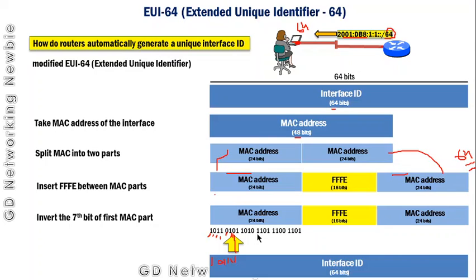Remember the steps — they are easy. Take the MAC address, divide it into two parts, insert FFFE (16 bits — that's fixed) between those two parts, then invert the seventh bit of the first MAC address part. Finally you will get the 64-bit interface ID of the IPv6 address.